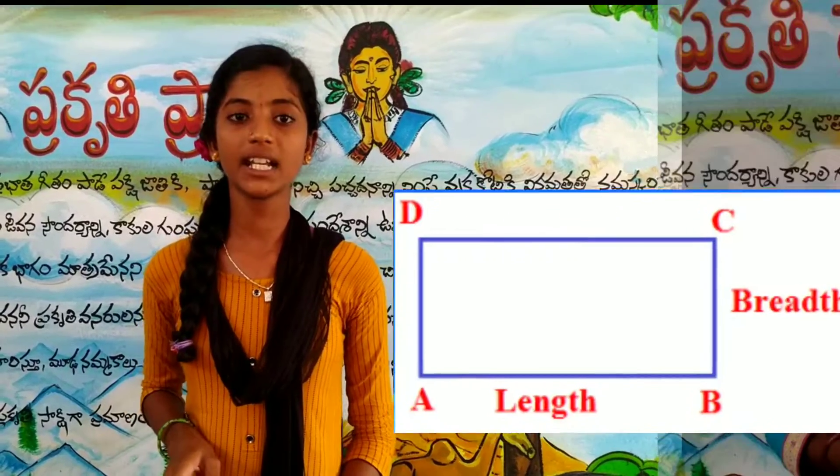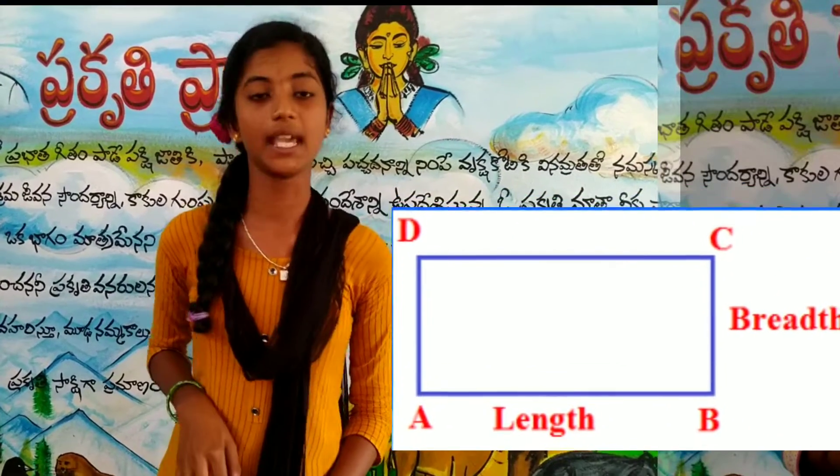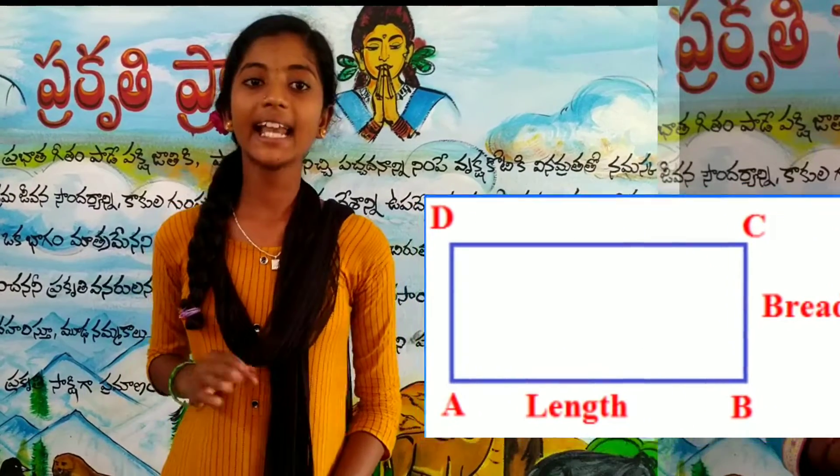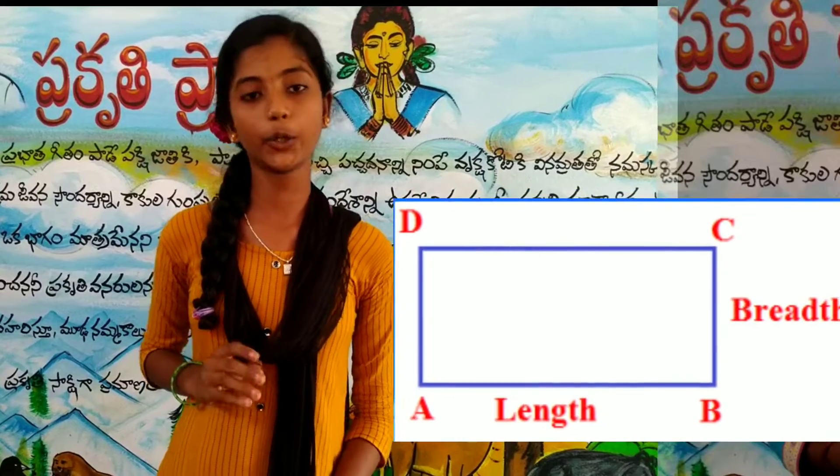Rectangle perimeter is equal to 2 into L plus B. Rectangle area is equal to L into B.